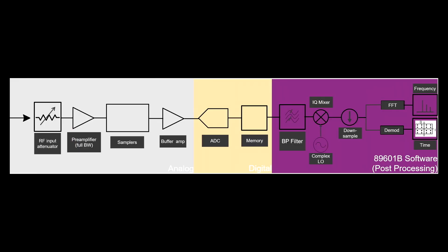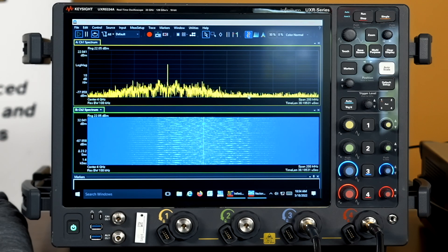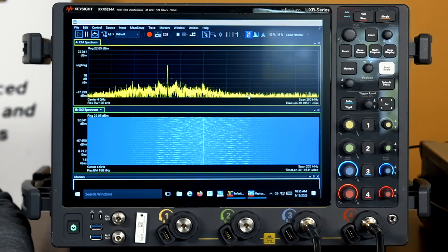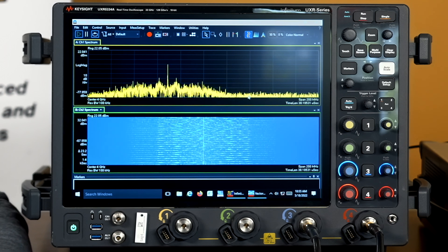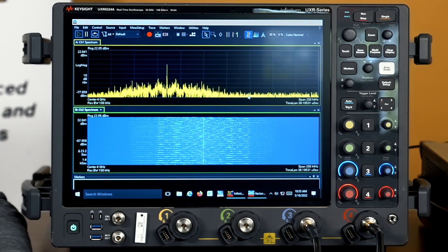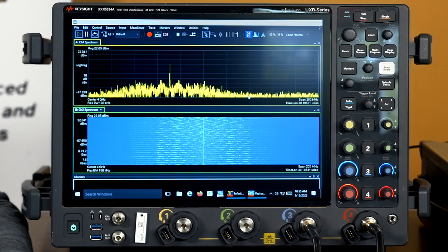Let's talk about the block diagram of an oscilloscope. You have an attenuator, a preamplifier, a sampler, and an AD converter. Once the data is in memory, we can read it out and process it with pathway vector signal analysis software. With advanced VSA software, we can look at the particular span around a center frequency, and all the analysis is done in software.